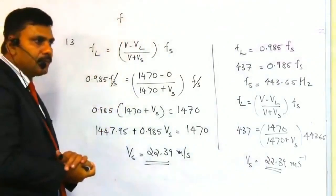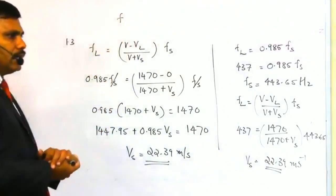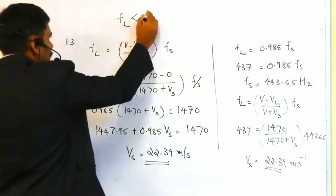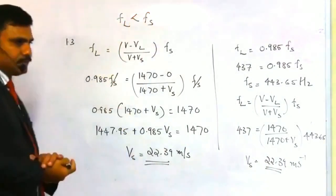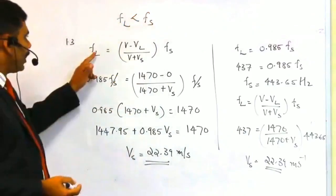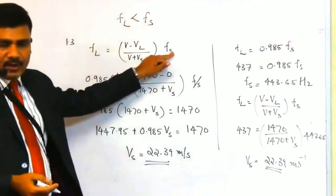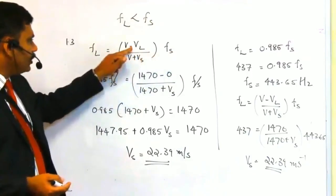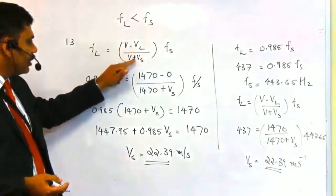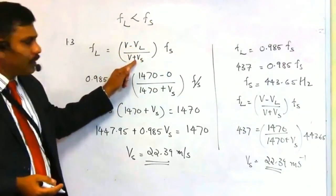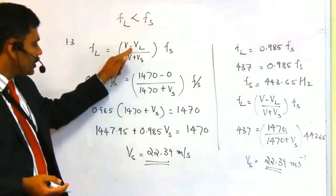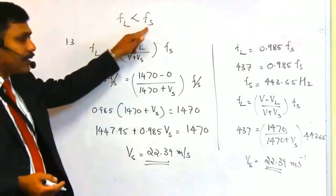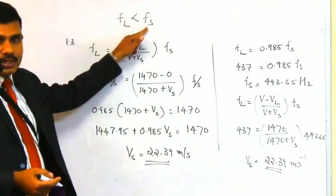The submarine is the listener. Since the frequency detected by the submarine is less than the frequency of the source, FL is less than Fs. That is why there is a minus sign in the numerator and a plus sign in the denominator — because FL is less than Fs, as is clear from the question.